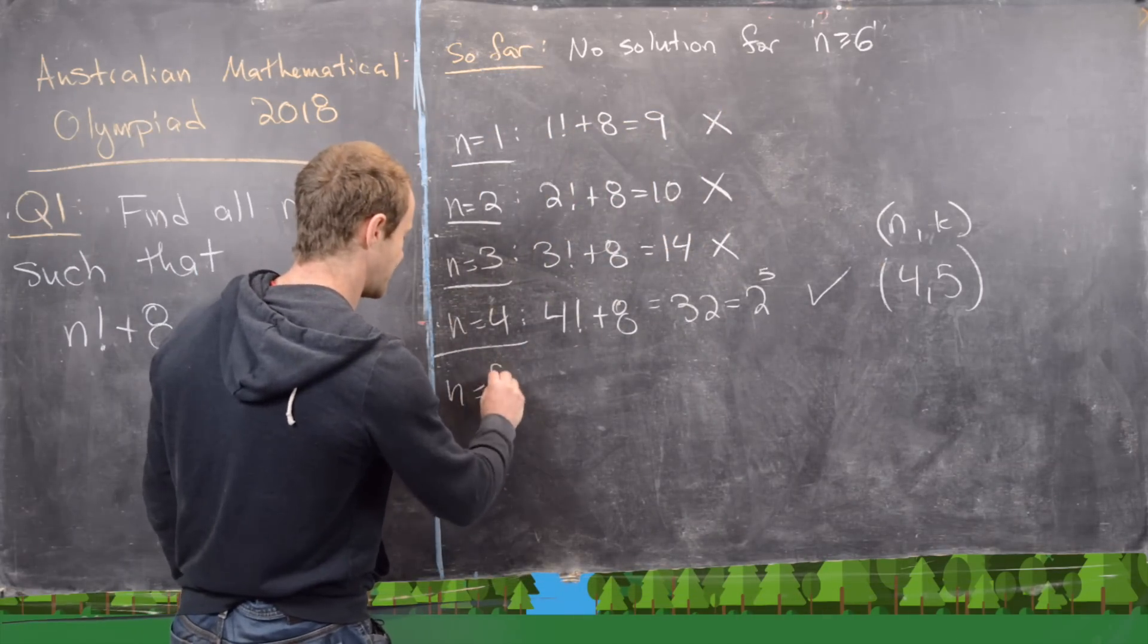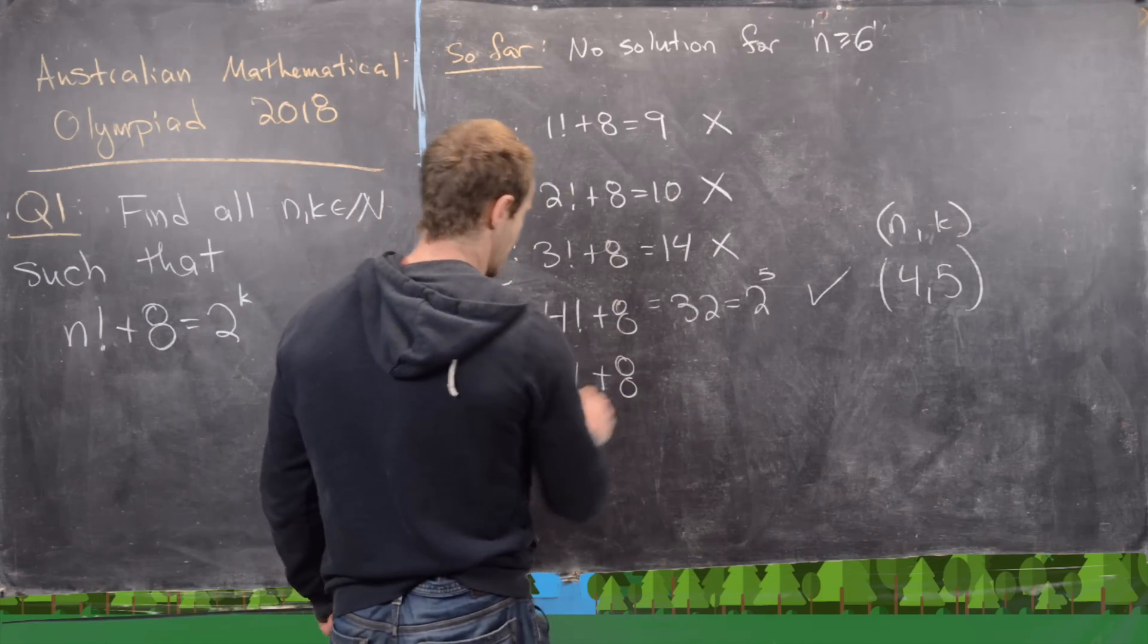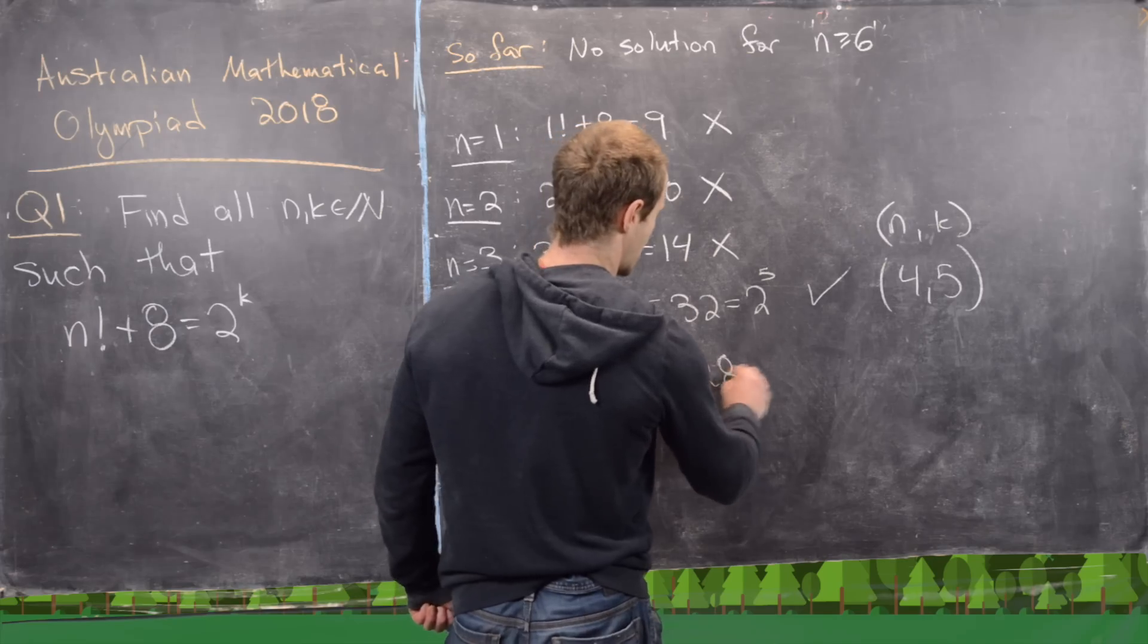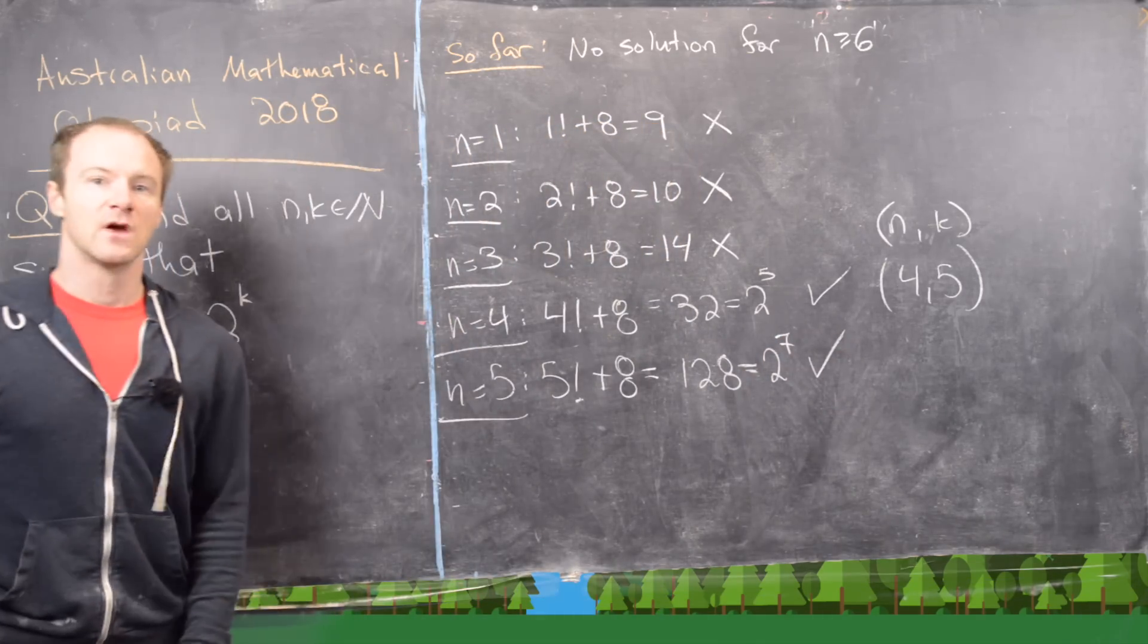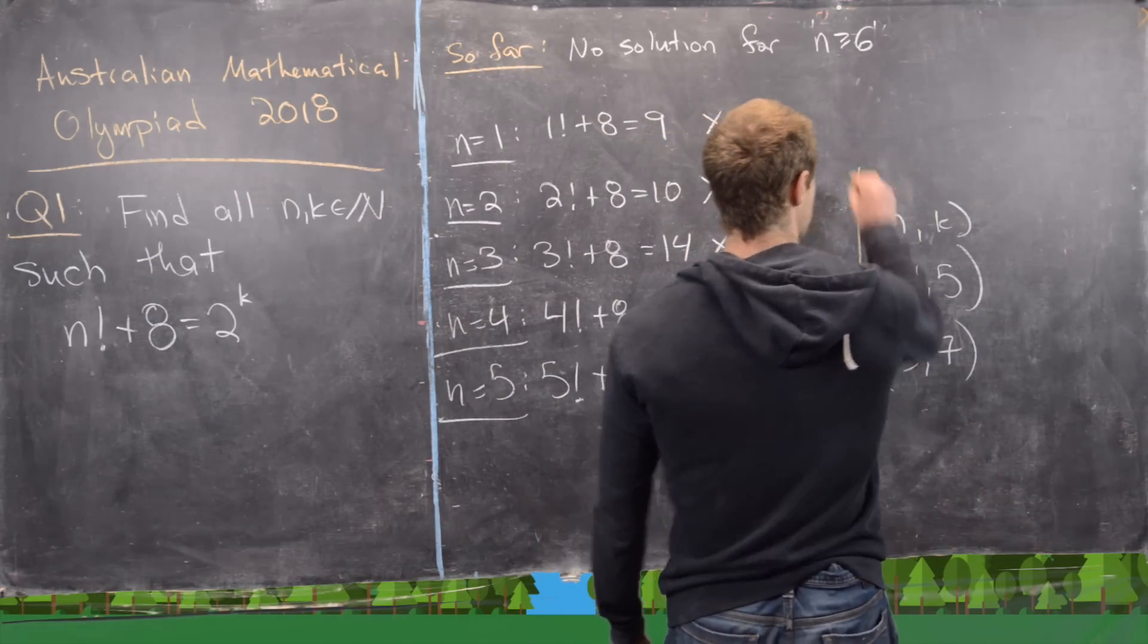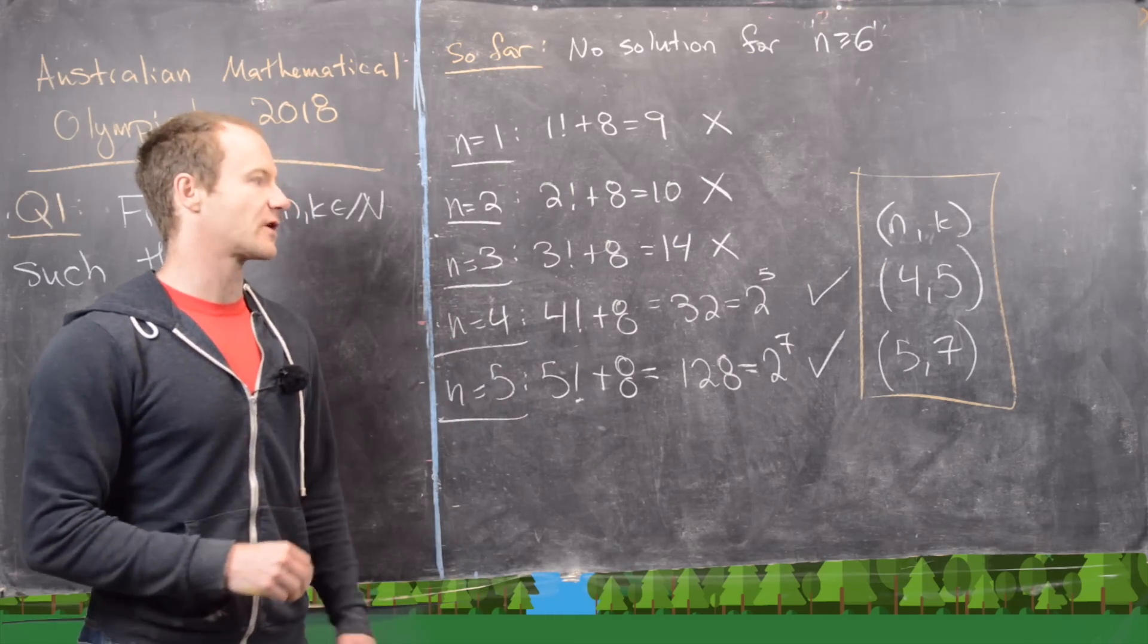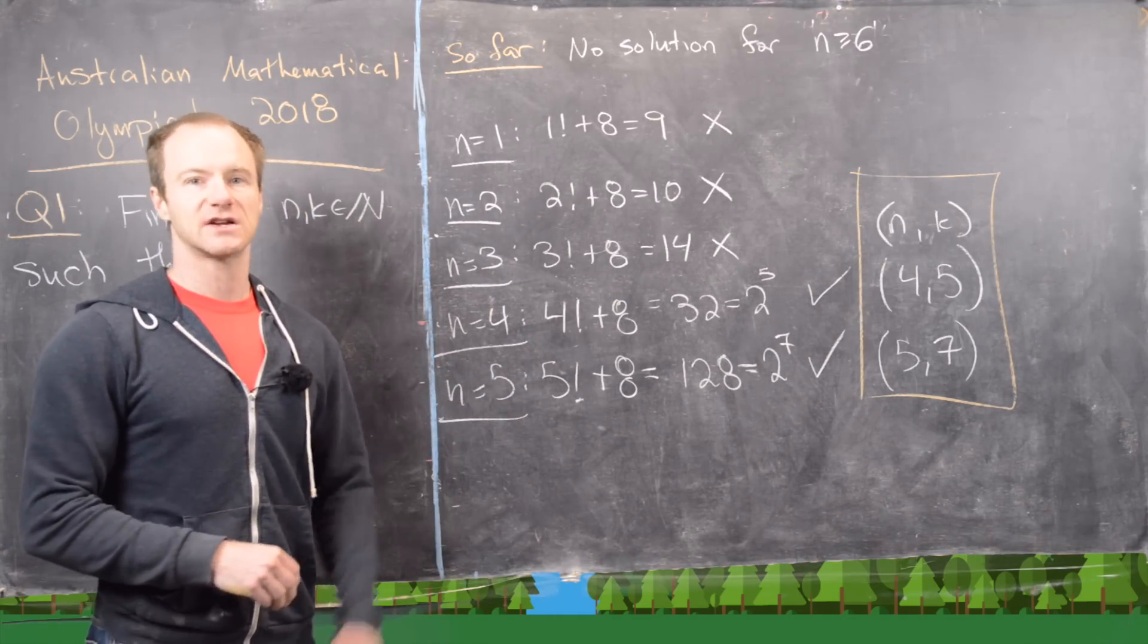And then n equals 5. We have 5 factorial plus 8. 5 factorial is 120. So that gives us 128, which is equal to 2 to the seventh. Again, we have a solution. And that is the ordered pair 5 comma 7. So what that tells us is that we have only these two solutions, n equals 4, k equals 5, and n equals 5, k equals 7. That's a good place to stop.